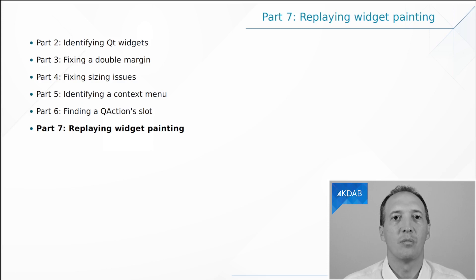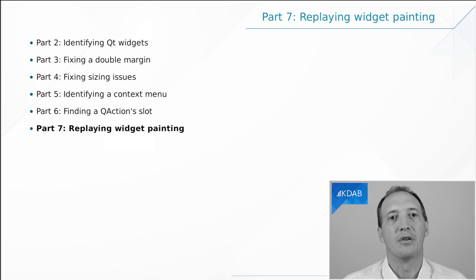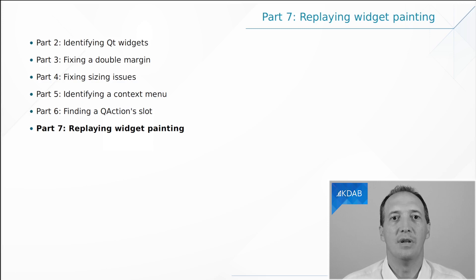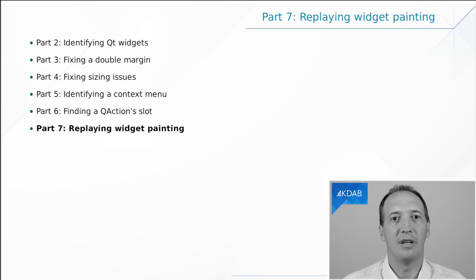All of these things we'll be able to do with GammaRay, which is a free and open source tool developed by KDAB. You can install GammaRay from sources on GitHub, or if you're using Linux it is surely part of your distribution already, so that's really easy to install. If you're using Windows you can find in the description a link to a video that will tell you how to actually install it on Windows.